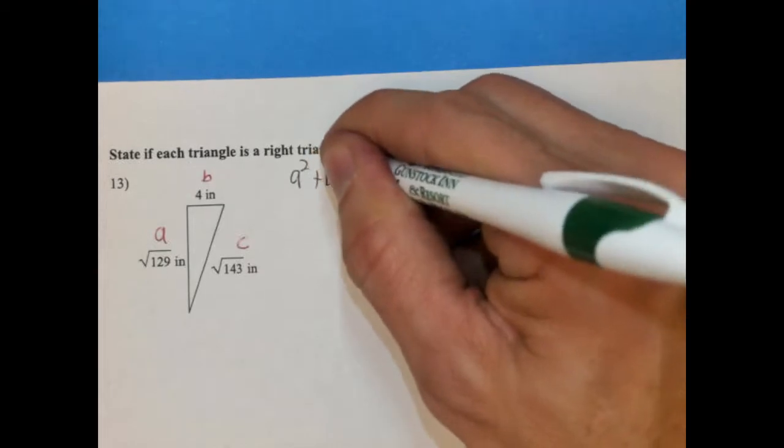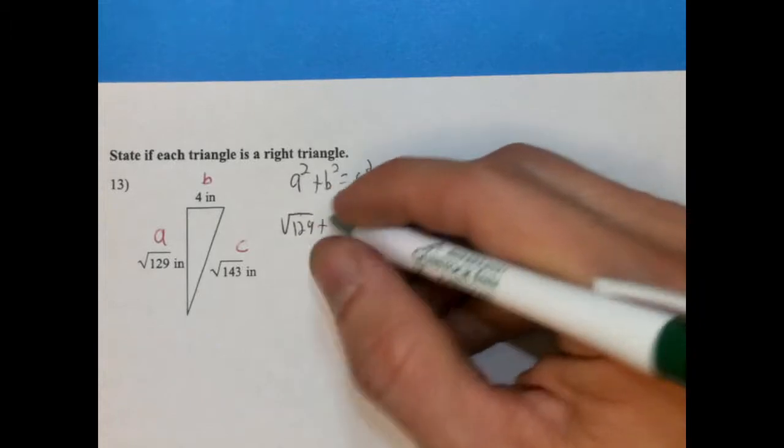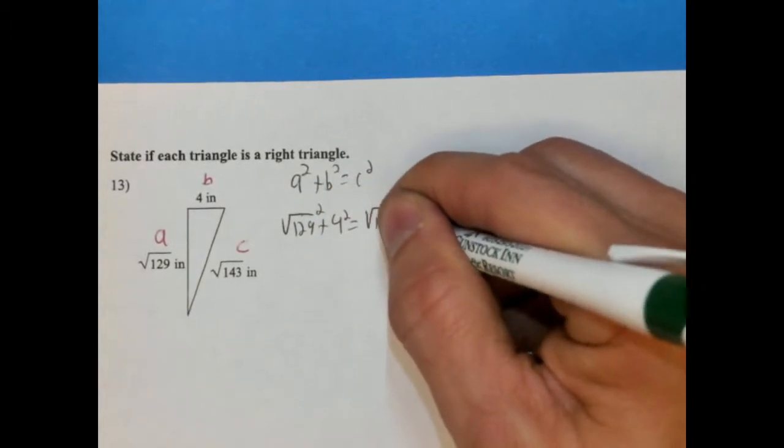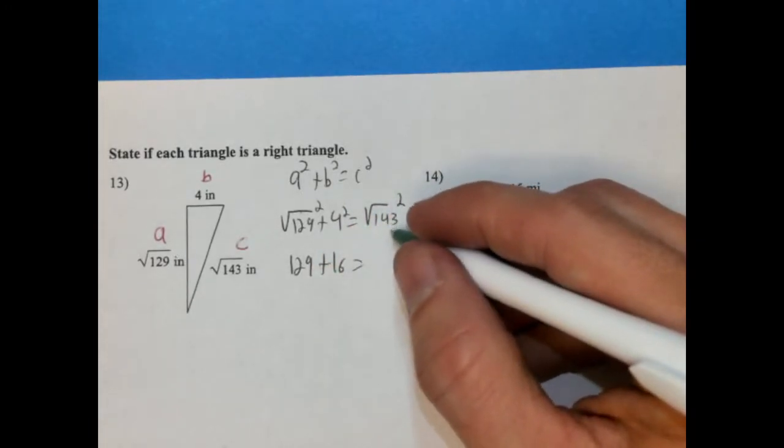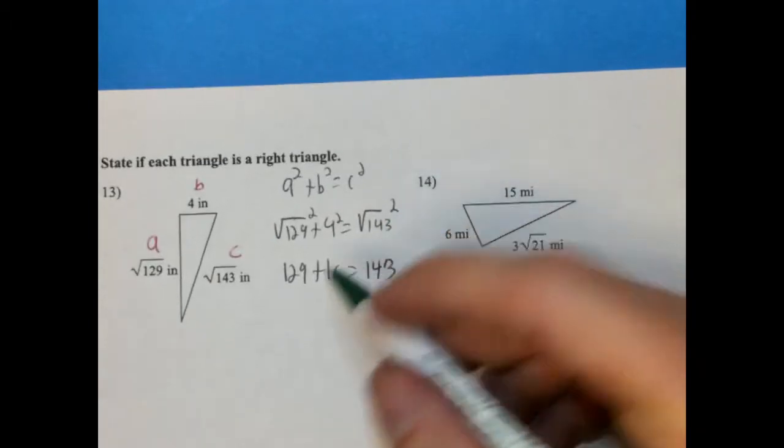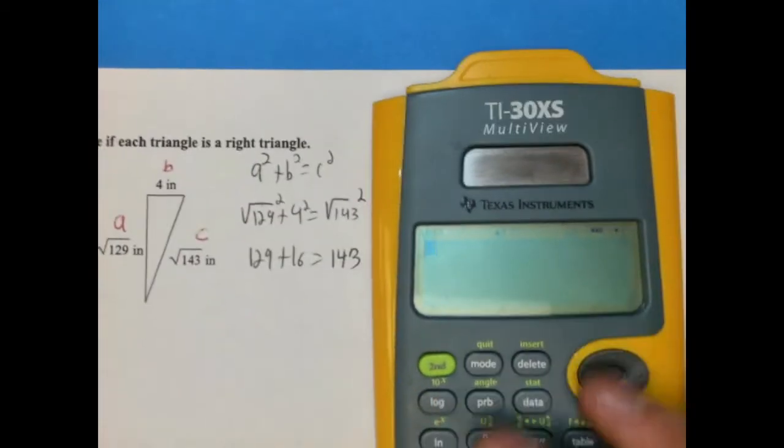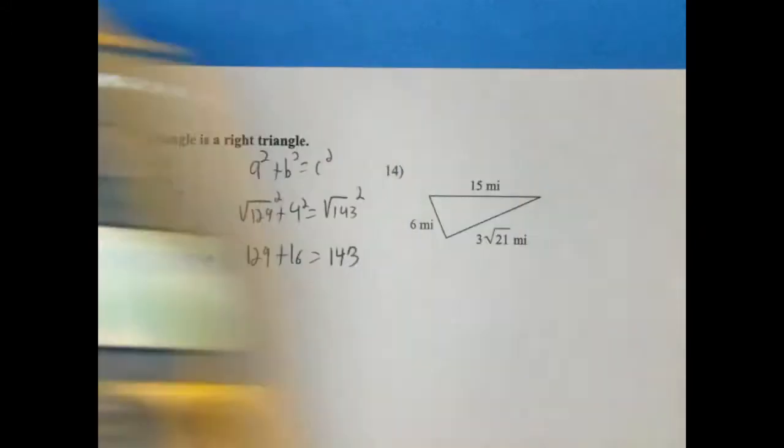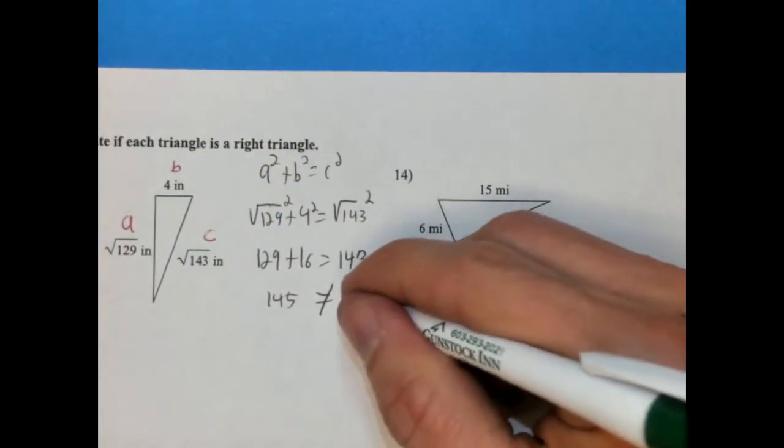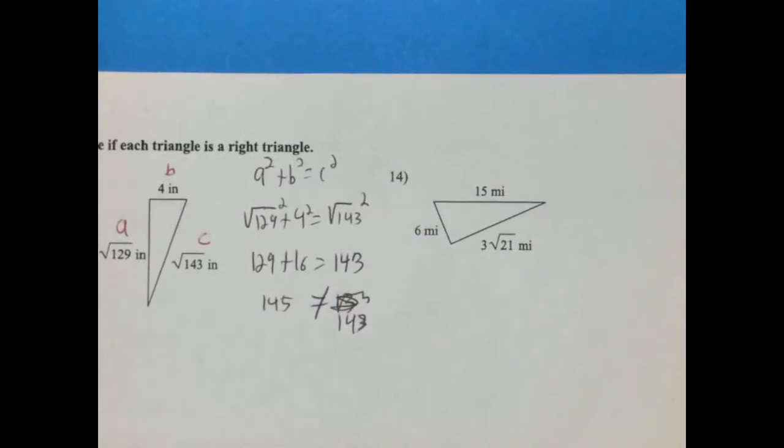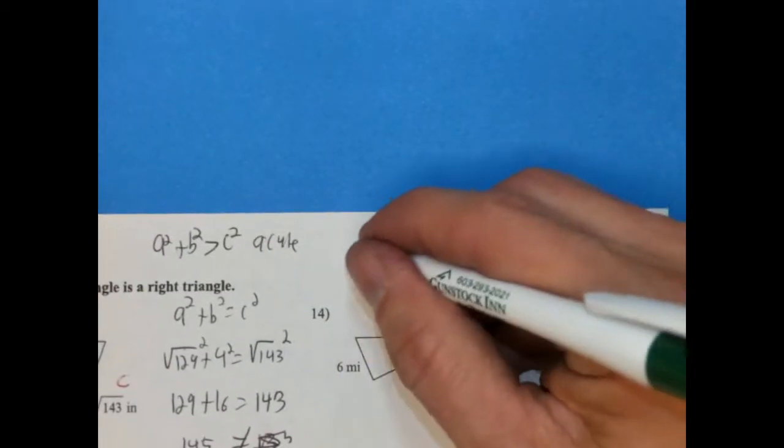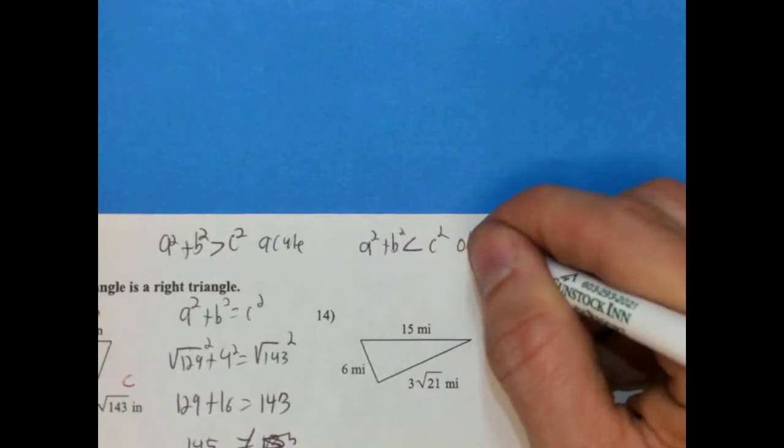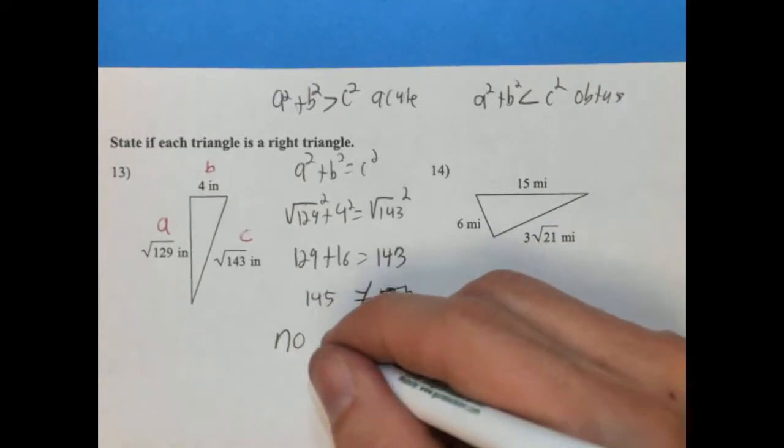So let's go ahead and assign our variables here. We're going to go with C here, and A and B don't matter. We'll write our formula: A squared plus B squared equals C squared. So radical 129 squared plus 4 squared equals radical 143 squared. Radical 129 squared is going to be 129, 4 squared is going to be 16, and radical 143 squared is going to be 143. Let's add these together. 129 plus 16, that's 145. So it is not a right triangle. We can actually say it's going to be an acute triangle because you remember that A squared plus B squared when it's larger than C squared, that's acute. And A squared plus B squared, when that's smaller than C squared, that's going to be obtuse. So it's not asking us this, but it's something that's good for us to know. It's not a right triangle, it's actually acute.